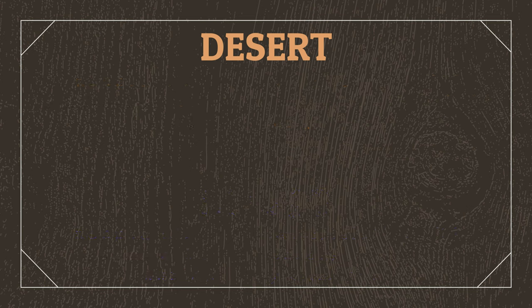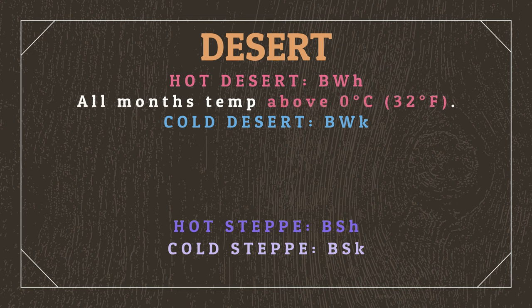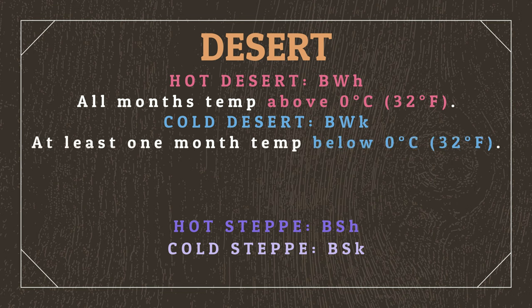Deserts are then further separated into hot and cold deserts, which are simply categorized as hot deserts having all months with average temperatures above 0 degrees Celsius, while cold deserts have at least one month where average temperatures drop below 0.